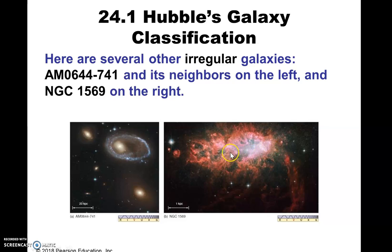Here are some more irregular galaxies. They don't have a spiral shape, they don't have a disc, they're not elliptically shaped — so that's why they get the name irregular galaxy.